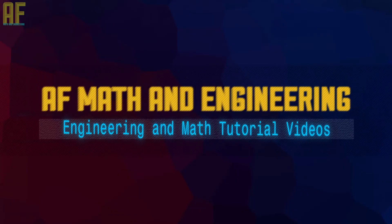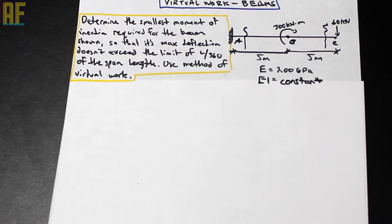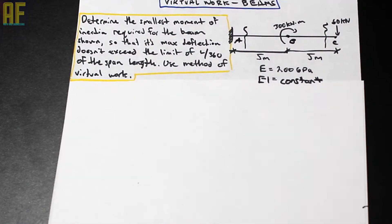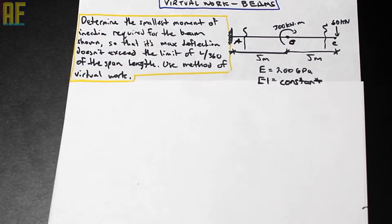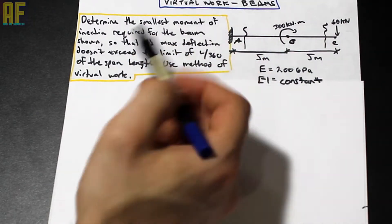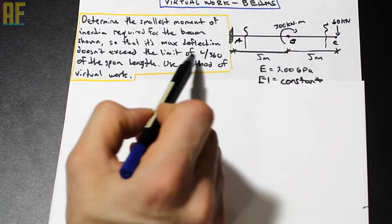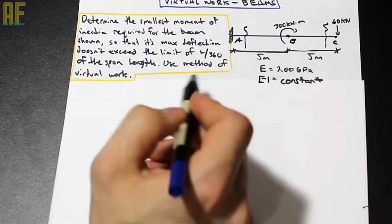Hey guys, welcome back. Fred here, AF Math and Engineering. Welcome to the channel. We're going to do a video on virtual work beams, and we're going to use the virtual work method not to solve for deflection or for rotation, which is what virtual work for determinate beams is usually used for, but we're going to use virtual work to solve for I — the smallest moment of inertia required for the beam shown so that its max deflection doesn't exceed the limit of L over 360 of the span length.